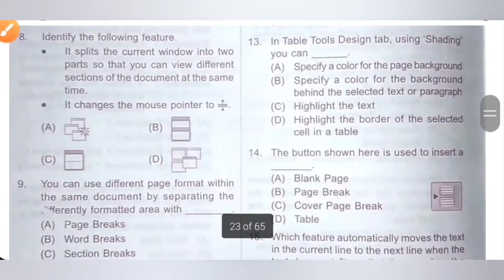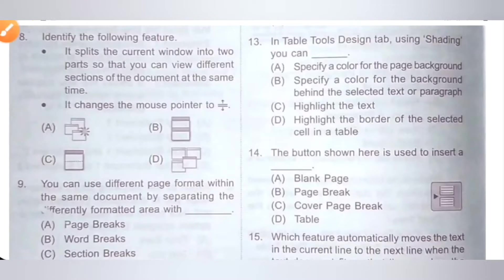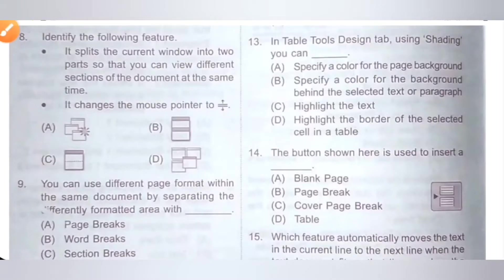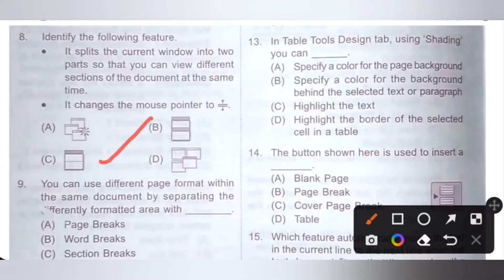Eighth question: identify the following feature. It splits the current window into two parts so that you can view different sections of the document at the same time. It also changes the mouse pointer. Please pause the video and check the given pictures for options A, B, C, and D. The feature is Split, accessed via View tab, Window group, then Split. Option C is the correct answer.